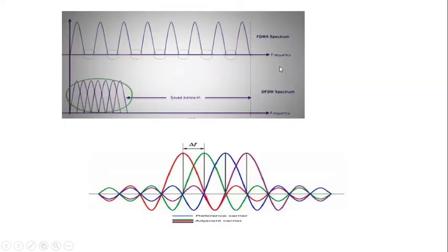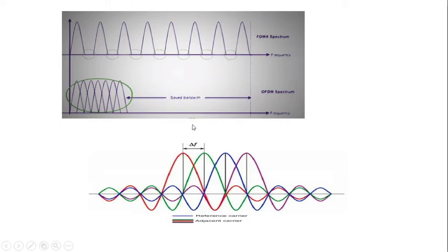In FDMA spectrum we have to employ guard bands, but in OFDM we have orthogonal carriers. Instead of a single carrier, we use multiple carriers of reduced bandwidth, and with the orthogonality maintained between carriers, no guard bands are needed. So we can save bandwidth. With closely spaced subcarriers of reduced bandwidth and without guard bands, that is the concept of OFDM spectrum. Orthogonality is maintained because at the peak of one carrier, adjacent carriers are at their null position.